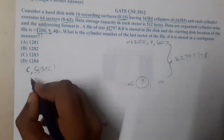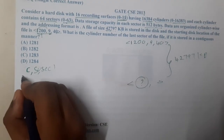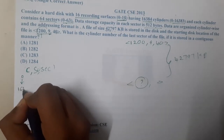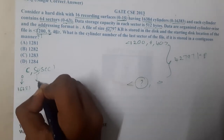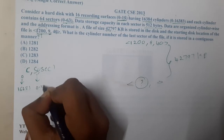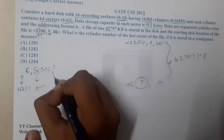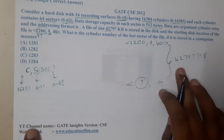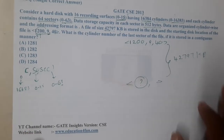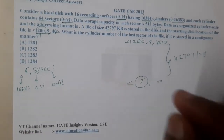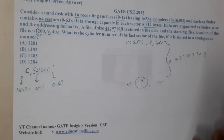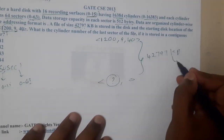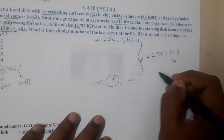How many cylinders are possible? They clearly gave 0 to 16,383. Surfaces are 0 to 15, and sectors are 0 to 63. Now we want to store this amount of data, so let's first convert the file size into bytes to make it easier to work with.